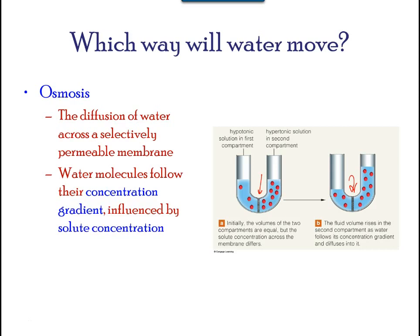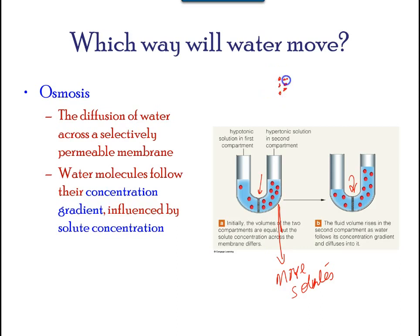On both sides of the membrane the water level is the same, but there are different concentrations on each side of a dissolved substance or solute that cannot cross the membrane. If the volume of water is the same but the concentration of solutes are different, then there is also a different concentration of water — the solvent — on either side of the membrane. A principle of diffusion is that molecules move around and will spread evenly through the medium if they can. However, only the material capable of getting through the membrane will diffuse through it. In this example, the solute cannot diffuse through the membrane, but the water can.